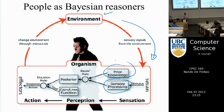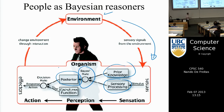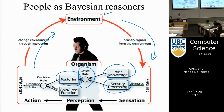You have a prior, a likelihood, and that determines the posterior. We've seen how to do this — given data and prior knowledge expressing a preference for smooth functions, we derive posterior distributions. However, if we now want to act upon the environment, we need something else: desires, objectives, goals, or utilities.